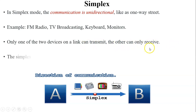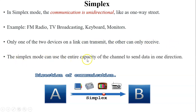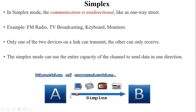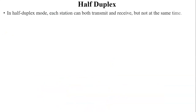Only one of the two devices on a link can transmit while the other only receives. The simplex mode can use the entire capacity of the channel to send data in one direction. Whenever user A sends data to user B, there is only one sender in the channel, so the maximum bandwidth of the channel is used by sender A.